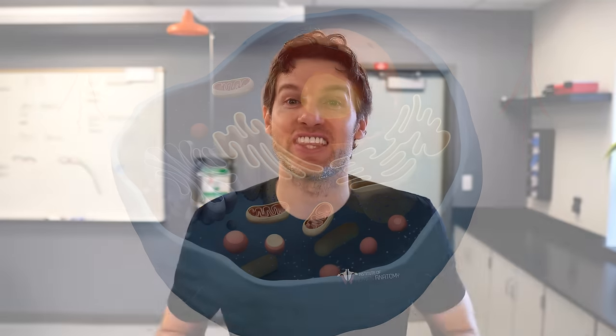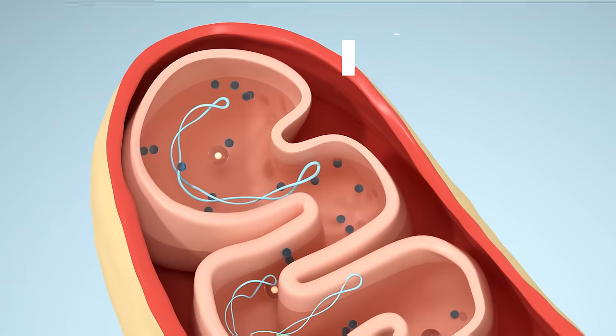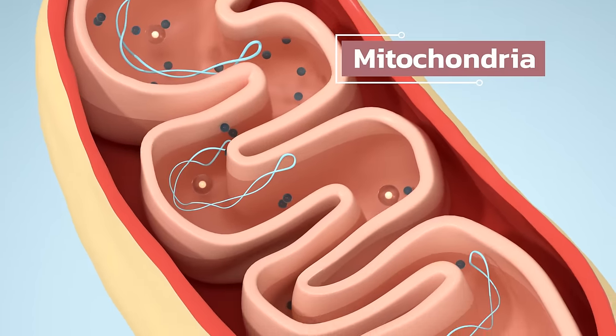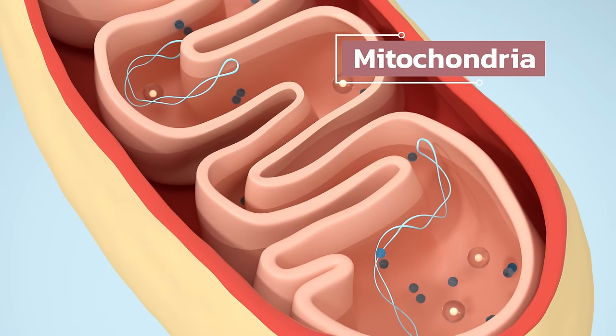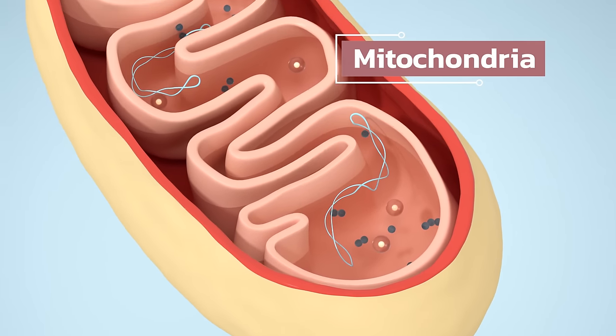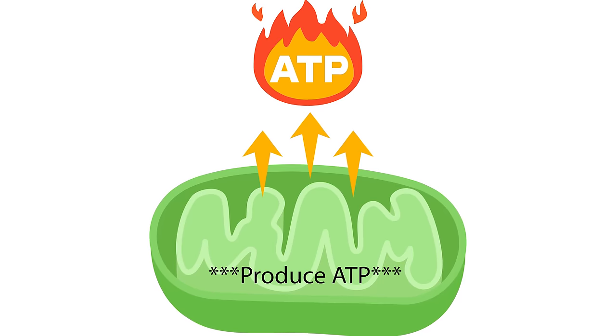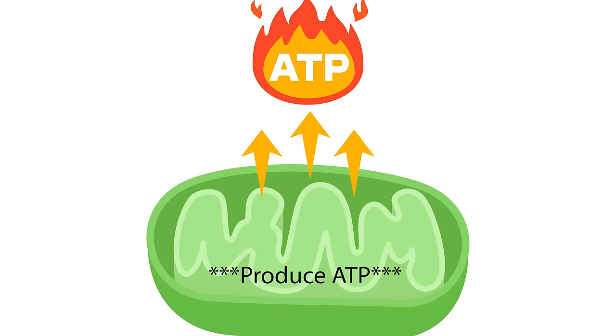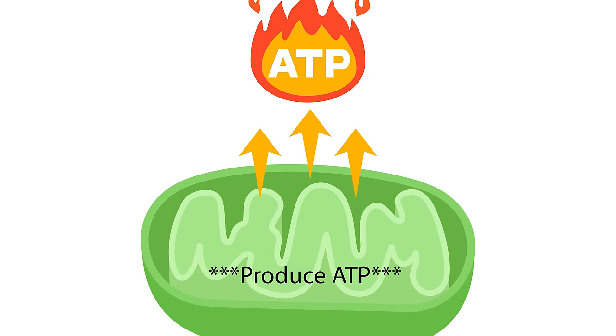Another important thing thyroid hormones do within the cell is increase the size and number of mitochondria — the powerhouse of the cell. Mitochondria utilize carbohydrates and lipids to produce ATP, which is the energy currency of the cell. With increased metabolic rate, we need more ATP to support that increased metabolism.